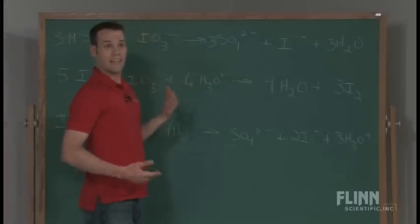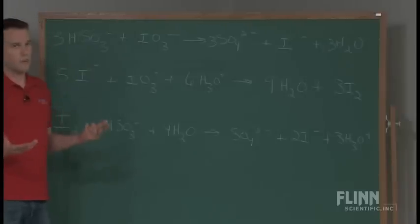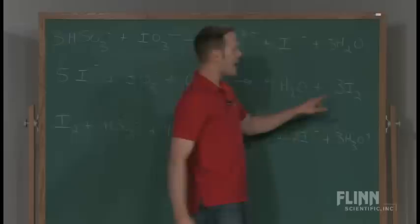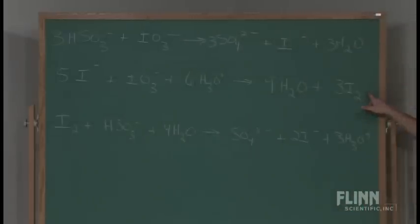Well, the iodide ion then, in the presence of iodate, because they're both in the same flask, when the iodide meets the iodate, it forms elemental iodine, or diatomic iodine.